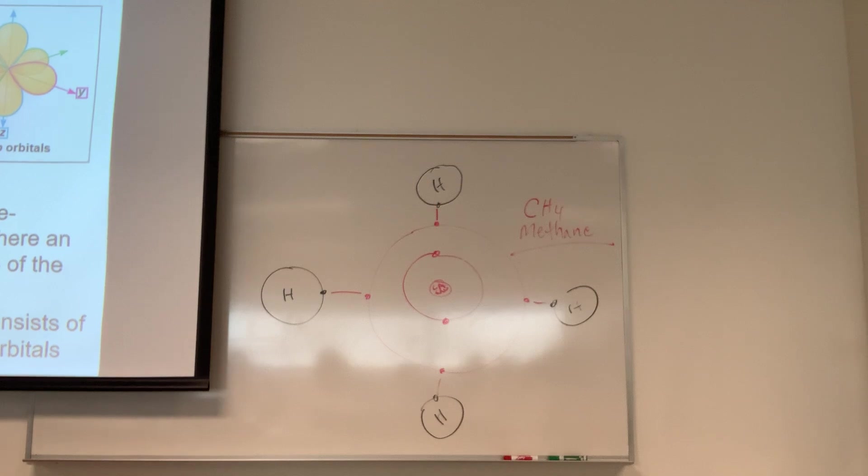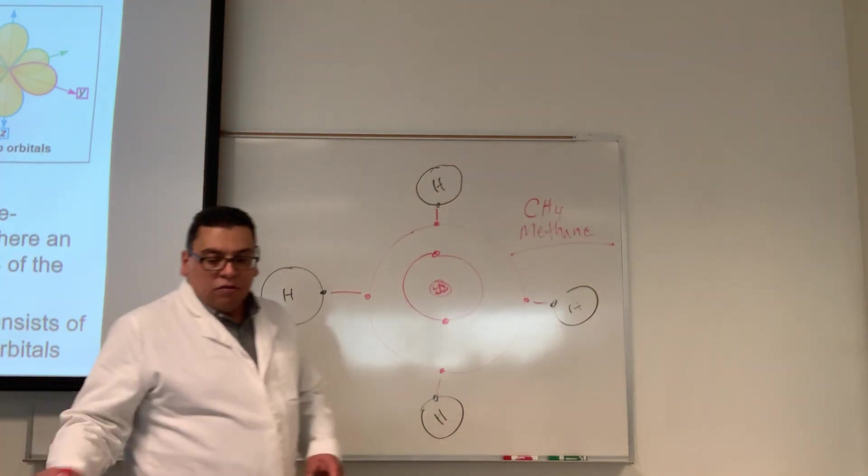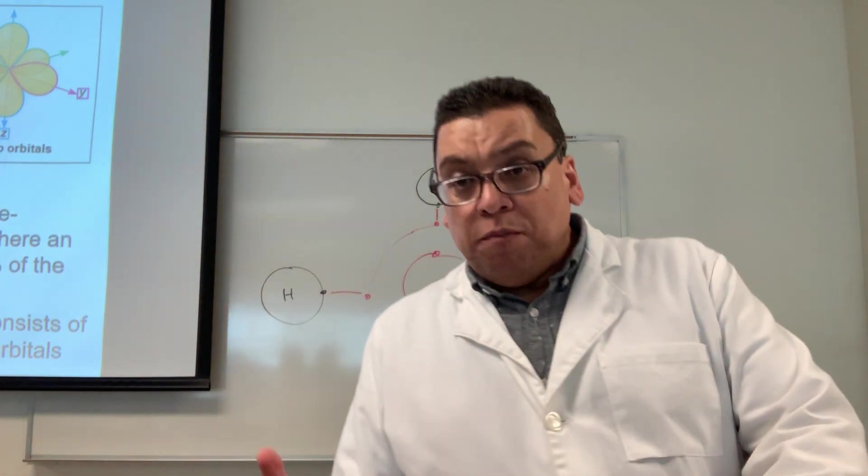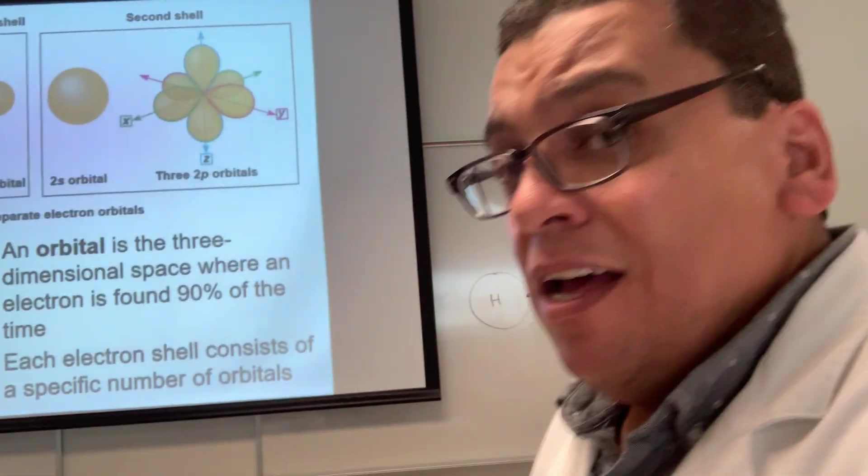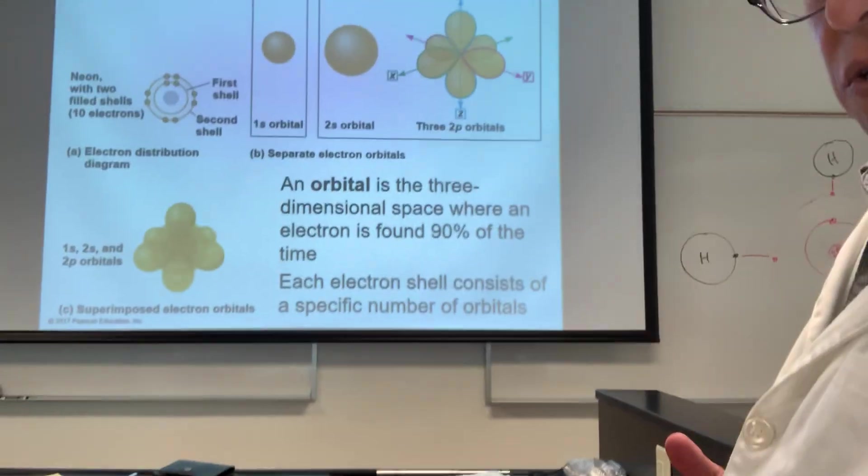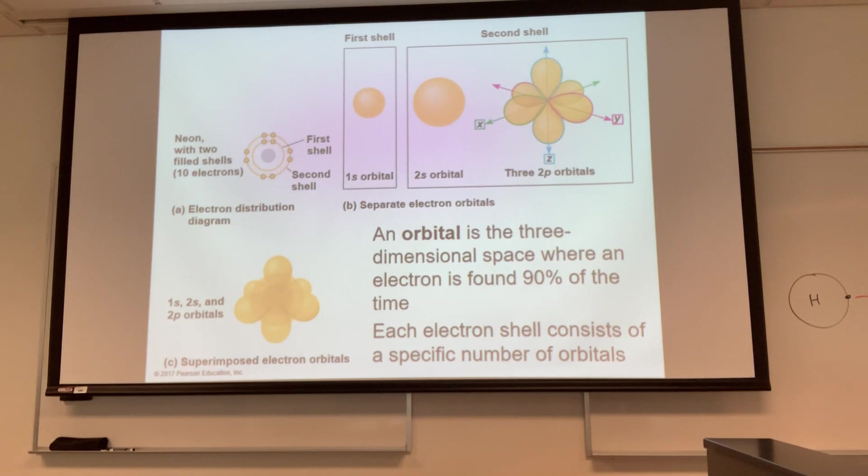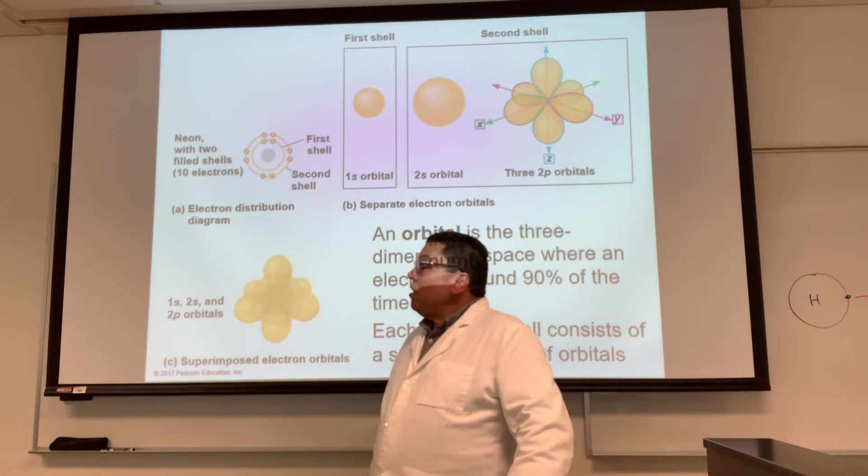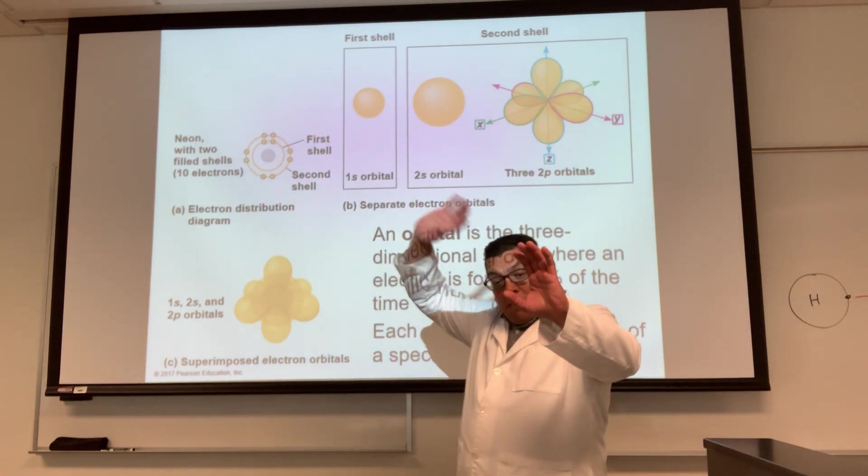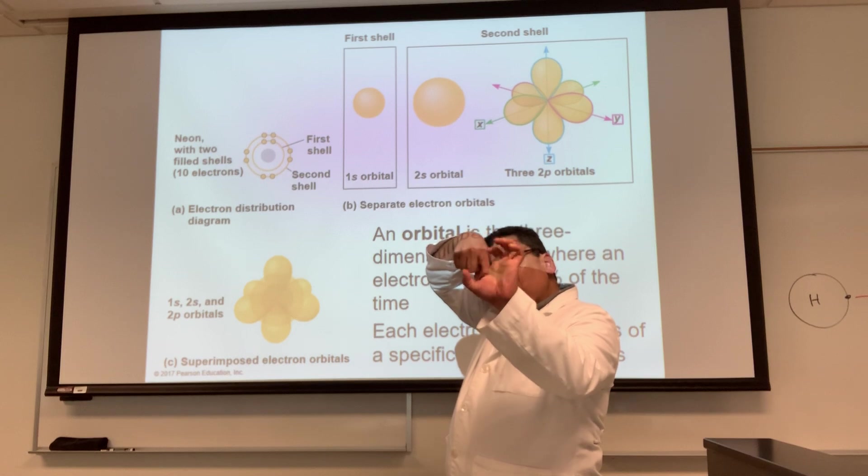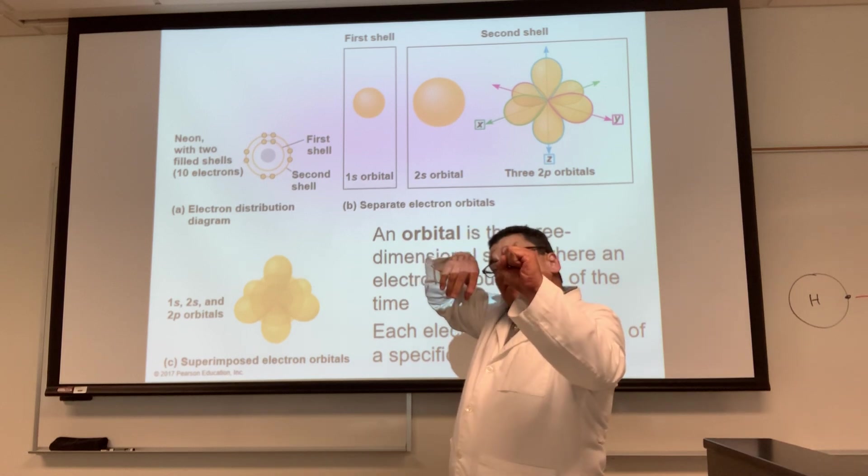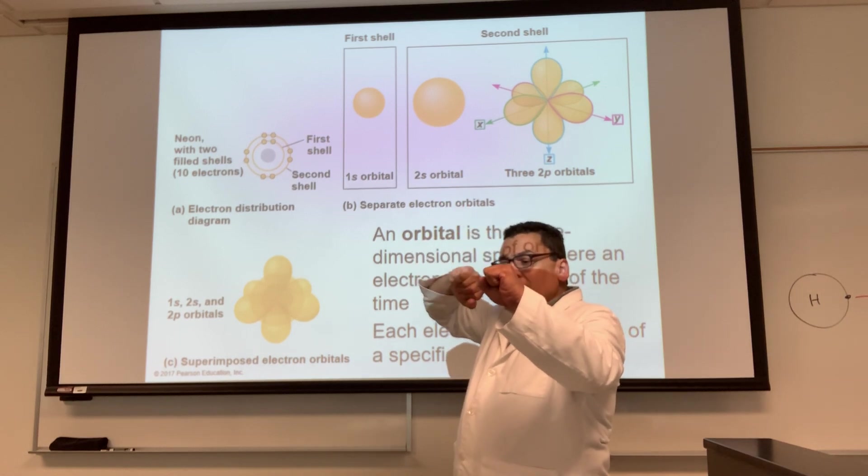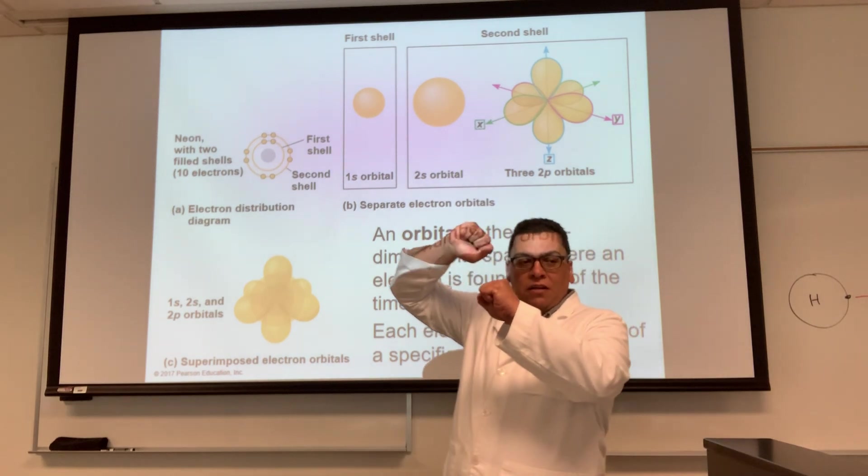The next topic is the shapes of the orbits - it's a tough topic for some students, so I'll try my best to help you out here. This is the nucleus - what's inside? Protons and neutrons. What's happening with the electrons? They're outside and always in motion.